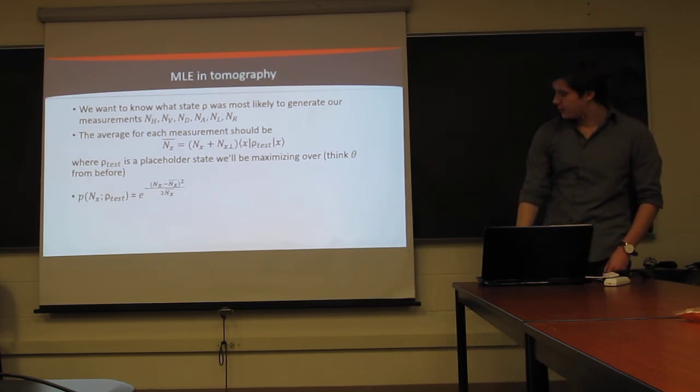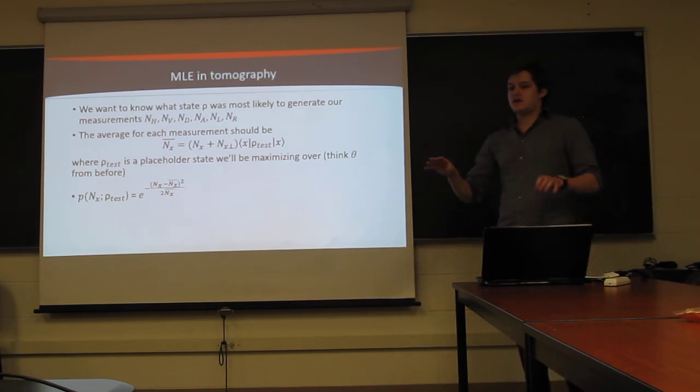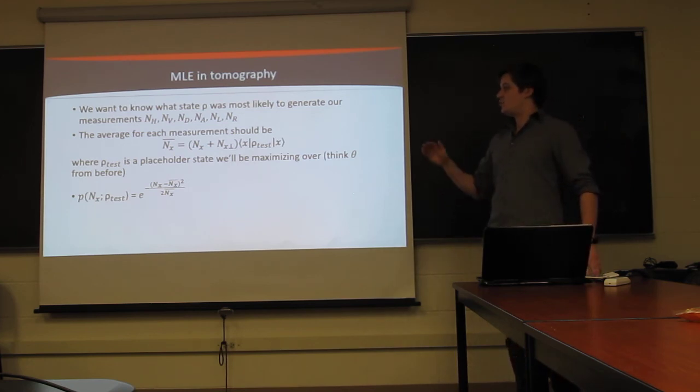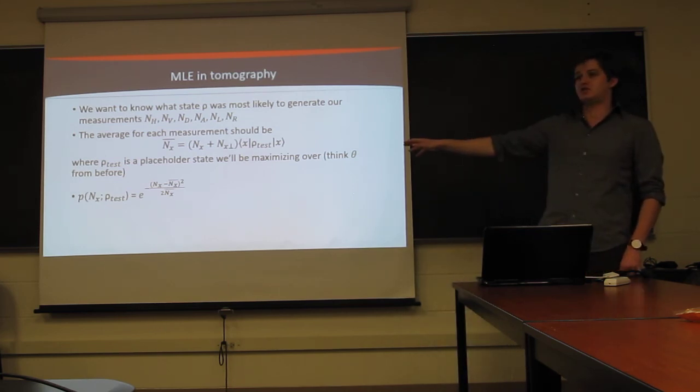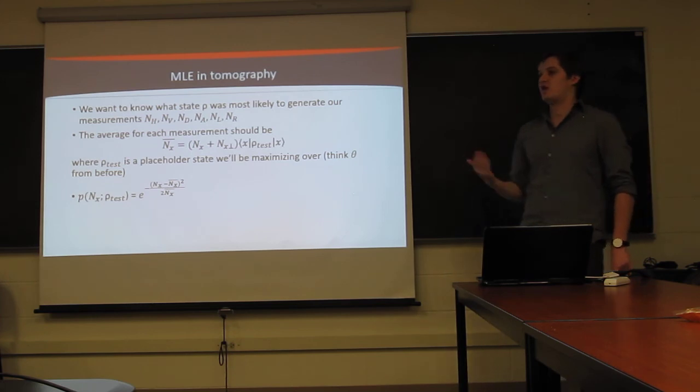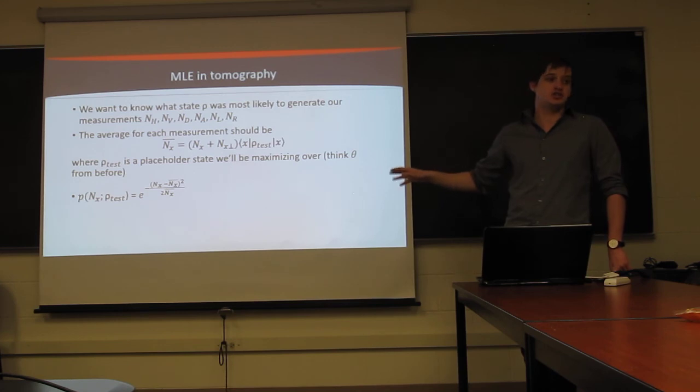And each of these will give us a probability, and we can use that probability to get a sort of test number of counts that would have happened if we had used this tunable state. And then from there, if each of those values, these n bars, are the theoretical number of counts we would have expected to see given that state, then the probability of having gotten that number of counts in our experiment looks like this Gaussian distribution. It's Gaussian because photon statistics are Poissonian, which is not Gaussian. But for a large number of photons, a large number of counts, a Gaussian function well approximates Poissonian statistics. So it's significantly easier computationally to just use a Gaussian approximation.